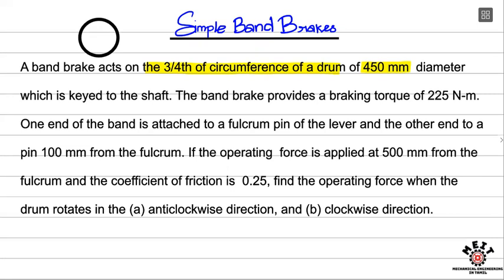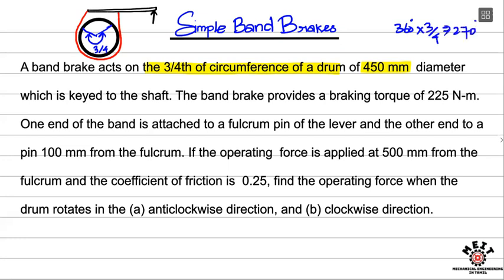If you apply a band brake by using the band, there is a lever and there will be a band. If you touch the band with a rotating drum, you will apply a brake. The band covers 3/4 of the circumference of the drum, that means it is 270 degrees. So the band is covered over 270 degrees. The band brake provides a braking torque of 225 Nm.